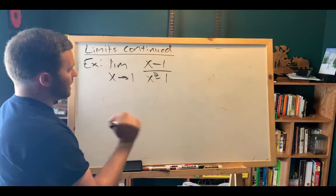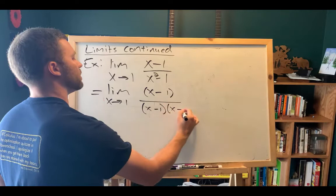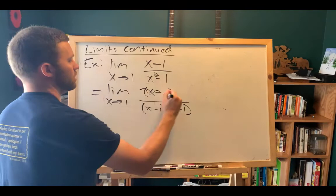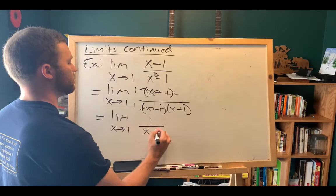So we can change this to the limit as X approaches one of X minus one divided by X minus one times X plus one. And right here, we can see that I have a factor of X minus one on top, and a factor of X minus one on the bottom. Those two things simplify to be one over one. So what I end up with, then, is limit as X approaches one of one divided by X plus one.